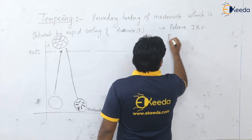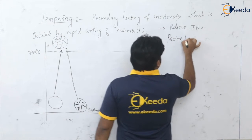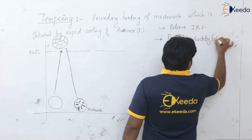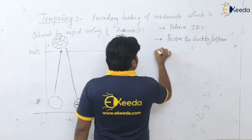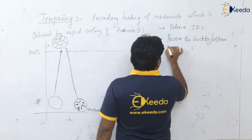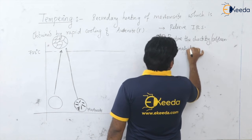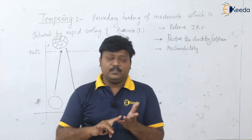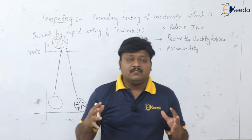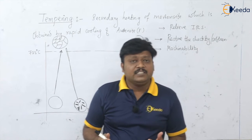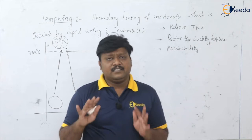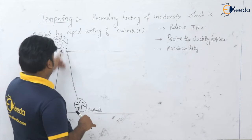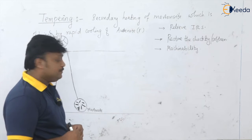In addition to removing internal stresses, we also want to restore the ductility and the softness in the steel, and to have machinability in the steel. So very importantly, the tempering we are doing is for removing internal stresses, increasing ductility, restoring softness in the steel, and also to get sufficient strength. We can heat this secondary product of austenite — that is martensite — for these purposes.